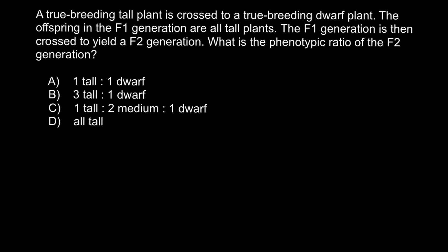So first of all, what does true breeding mean? Imagine that we have two alleles: allele A that is dominant and allele a that is recessive. These two alleles can make in a diploid organism the following genotypes: capital A capital A, capital A small a, and small a small a.